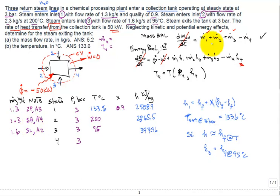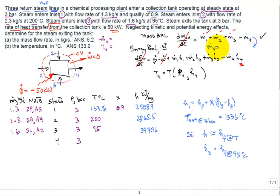At this point all mass flow rates are tabulated. Applying the mass balance equation gives ṁ₄ = 5.2 kg/s — that is the answer for part A.